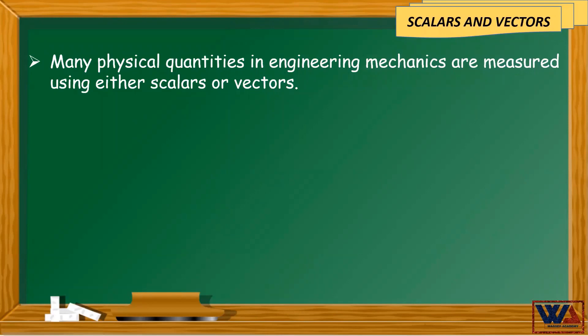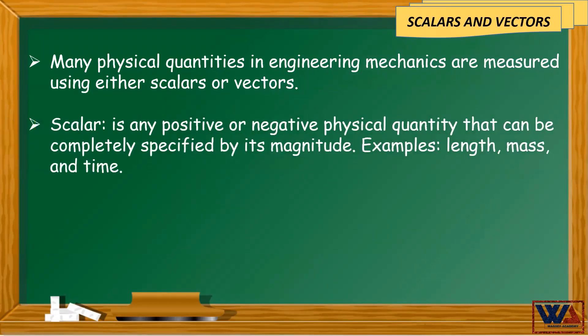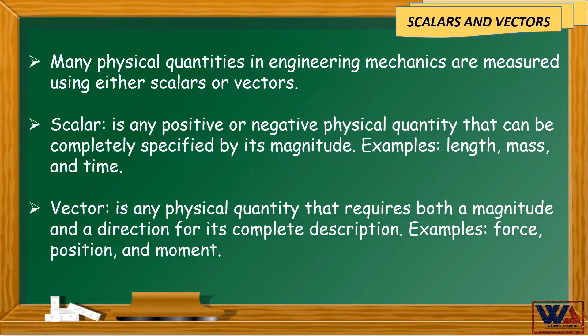Many physical quantities in engineering mechanics are measured using either scalars or vectors. A scalar is any positive or negative physical quantity that can be completely specified by its magnitude — examples include length, mass, and time. A vector is any physical quantity that requires both a magnitude and a direction for its complete description — examples include force, position, and moment.